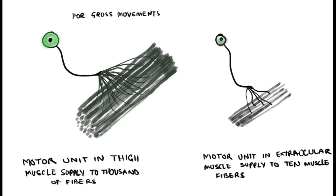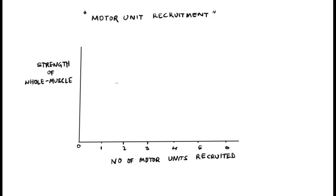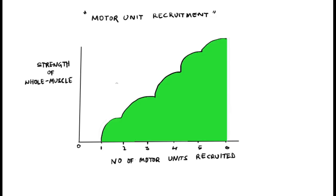Large motor neurons are meant for gross movements, whereas fine movements and coordinated movements are achieved by small motor neurons. The required strength of the muscle belly can be achieved by the gradual recruitment of different motor units. This is how the strength of the muscle can be generated upon the recruitment of various motor neurons.